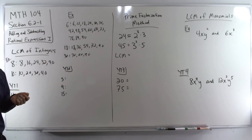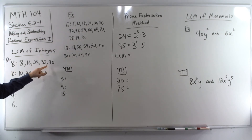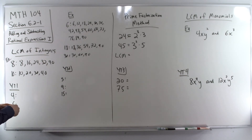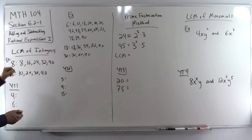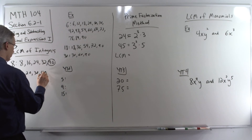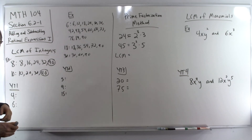Recall the multiples are what we get when we take a number and multiply by 1, 2, 3. You can think of it as counting by that number. So we're counting by 8s to get the multiples of 8, counting by 10s to get the multiples of 10. We want the least common multiple — that's the smallest number that's in both lists. Here are the multiples of 8 and the multiples of 10, and the first match is 40. So the LCM of 8 and 10 is 40.